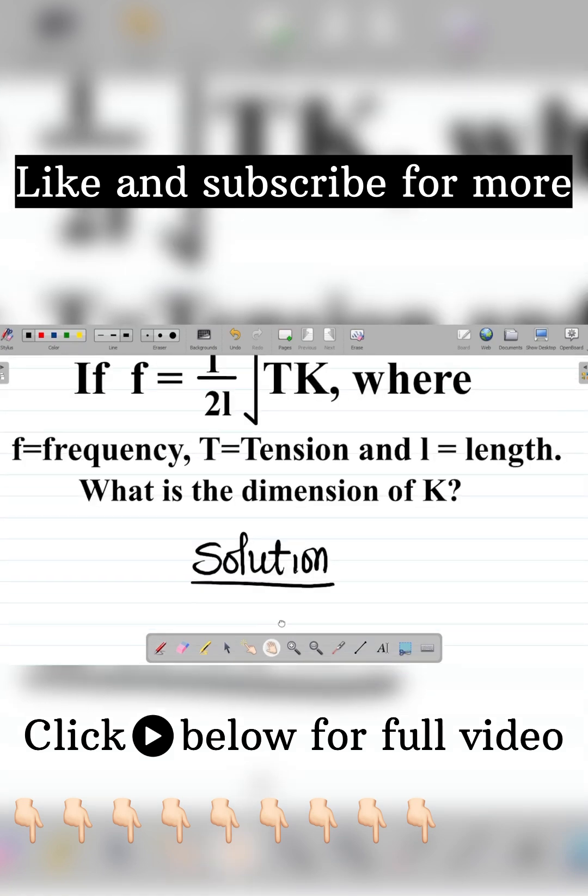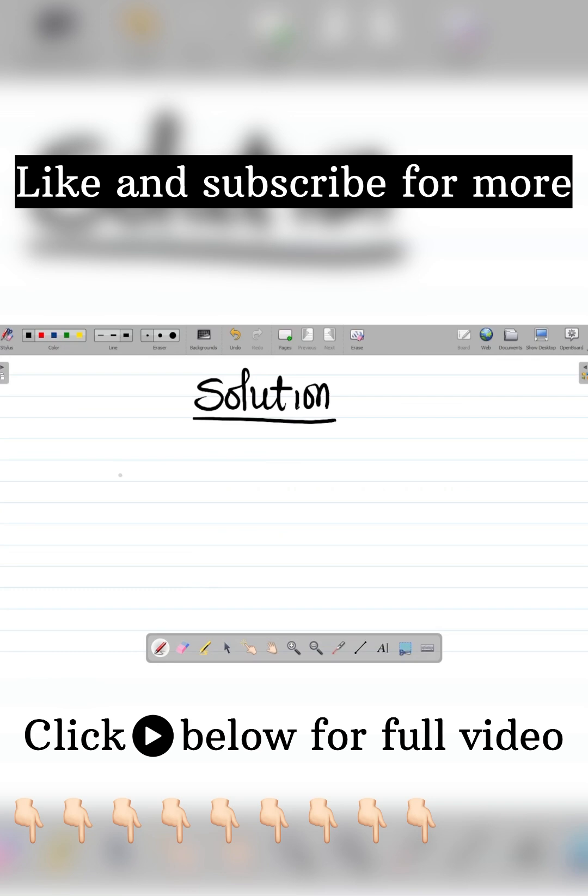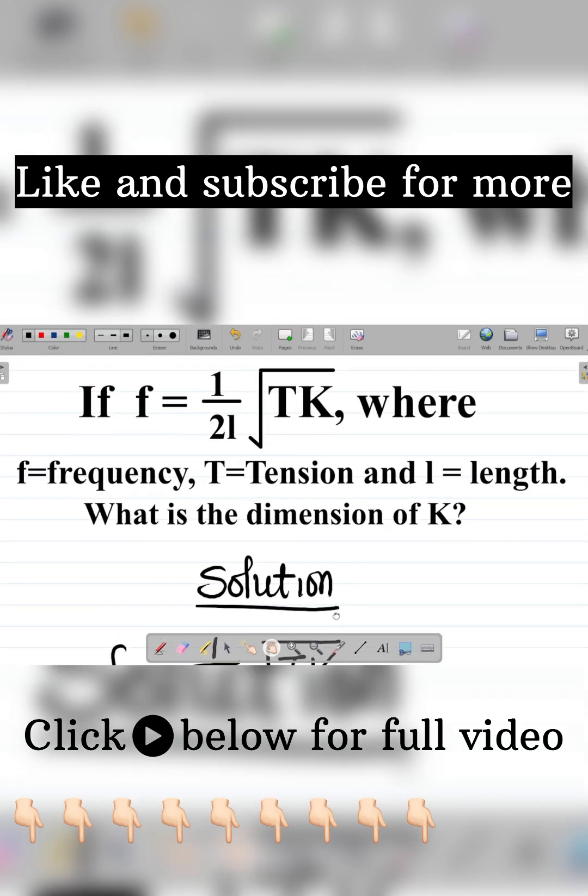Solution. We're given that f, which is frequency, equals 1 over 2l into the square root of TK. So you have this. My first task would be to get the dimension of each of the parameters.